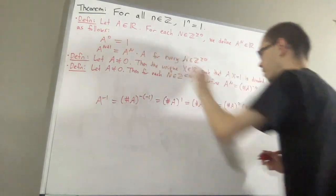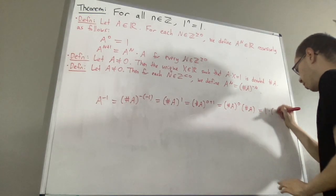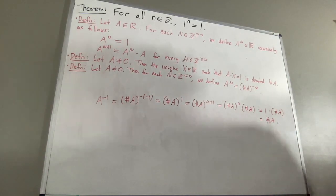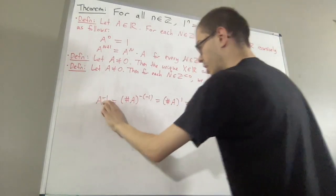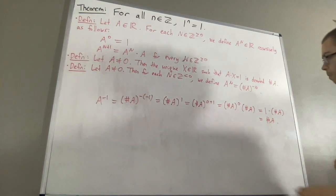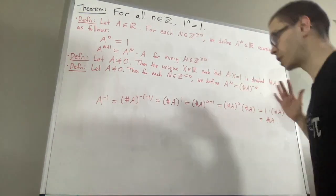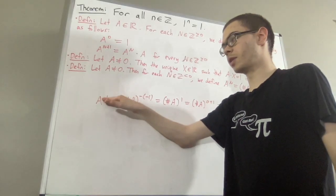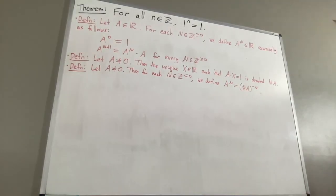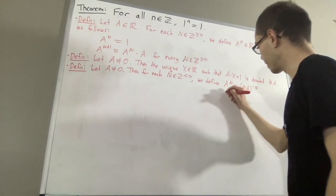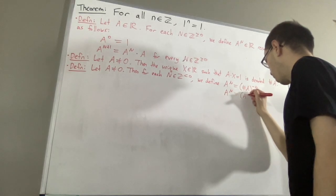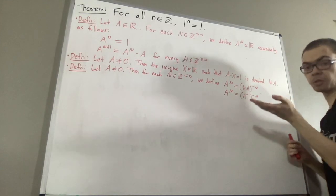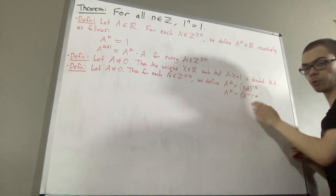According to the first part of the definition, any real number to the power of 0 is equal to 1. So, this is just 1 times the reciprocal of a, which is equal to the reciprocal of a. As you can see, a with an integer exponent of negative 1 is the reciprocal of a. So we can continue using the usual common notation for the reciprocal — a with a superscript of negative 1. We can rewrite this as: a to the power of n is equal to a to the power of negative 1, all to the power of negative n. We can interpret a to the power of negative 1 as either a with an integer exponent of negative 1, or as the reciprocal of a — they're both the same thing.